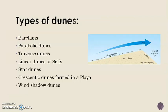Moving on to types of dunes: barshans, parabolic dunes, transverse dunes, linear dunes, star dunes, crescentic dunes formed in a playa, and windshire dunes. All these variants are brought about by differences in sand supply and wind movement.